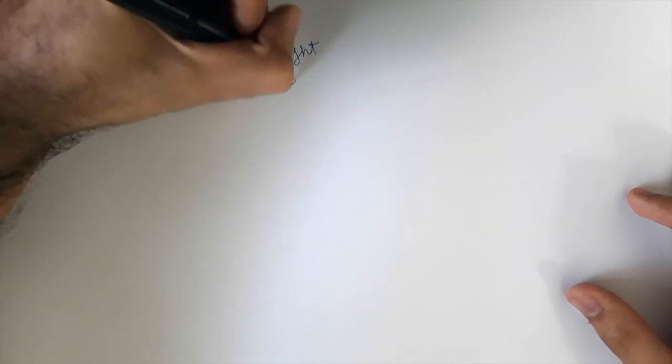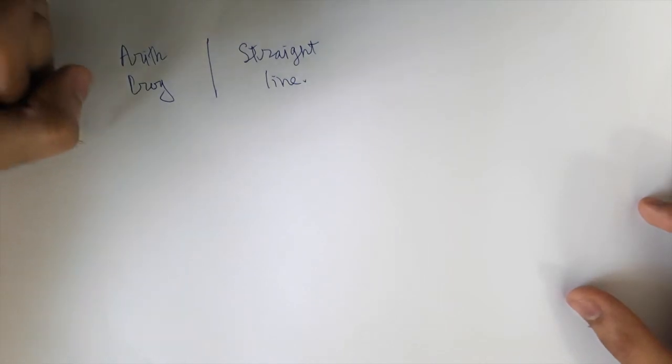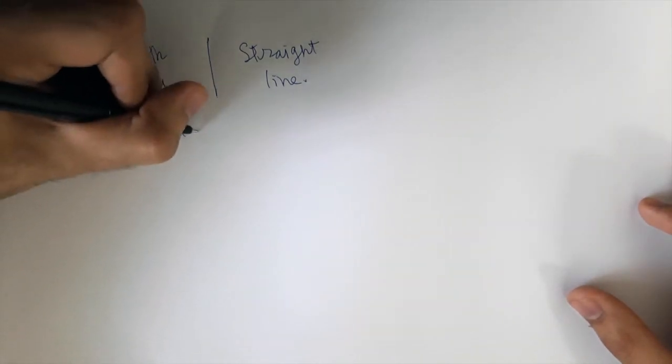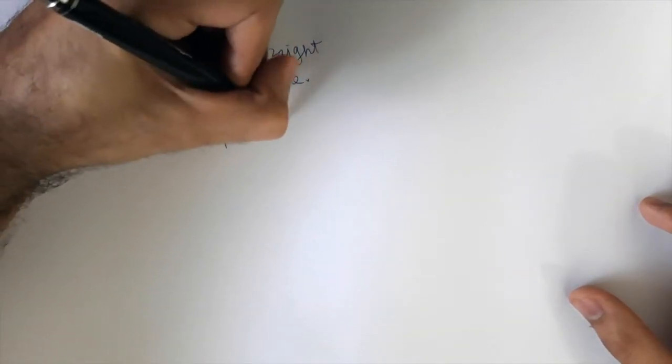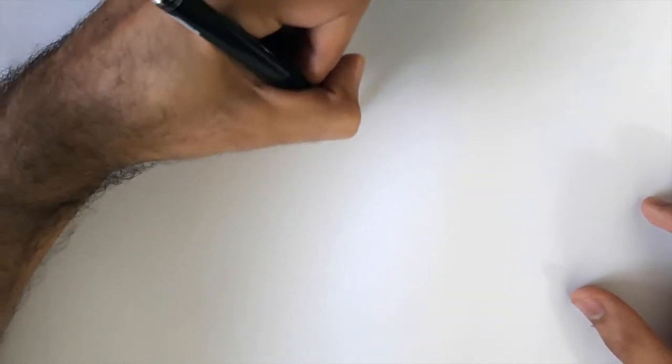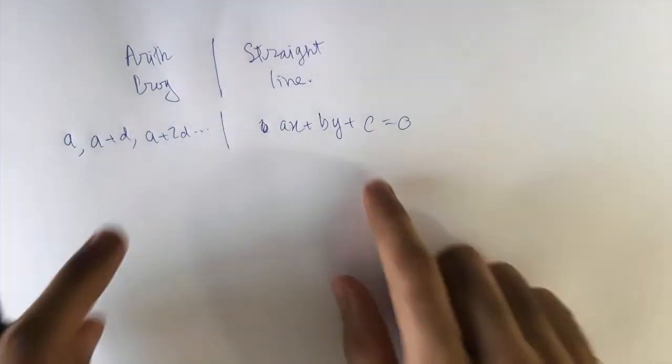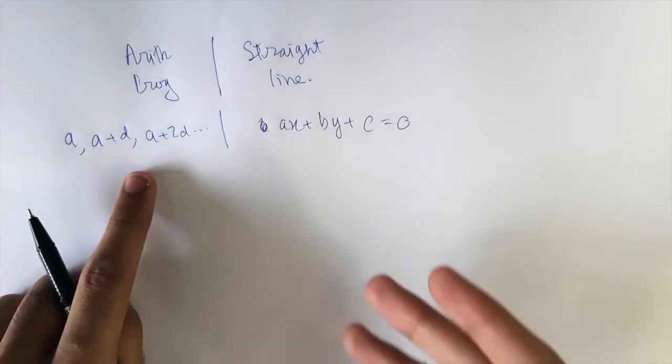There are actually some pretty interesting connections between arithmetic progressions and straight lines. An arithmetic progression is of the form a, a+d, a+2d, and so on. A straight line is something like ax + by + c = 0. I claim there are some connections between those two.